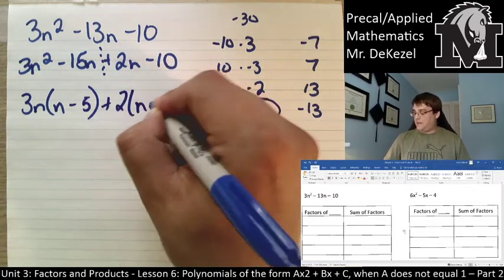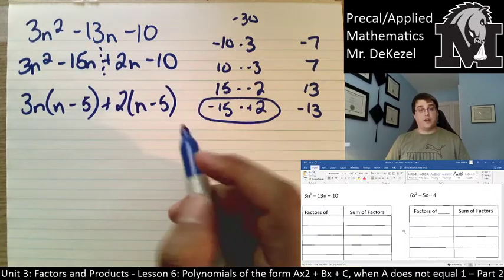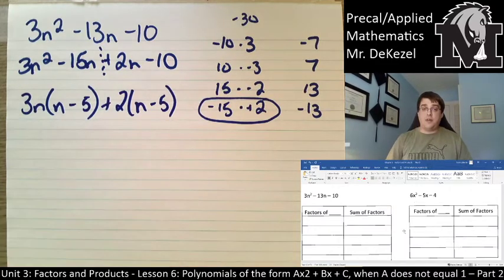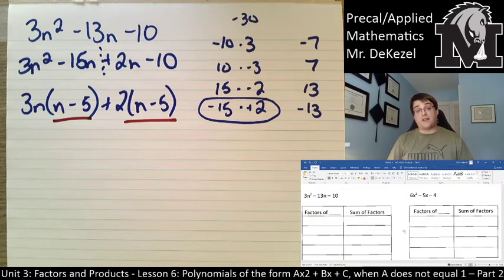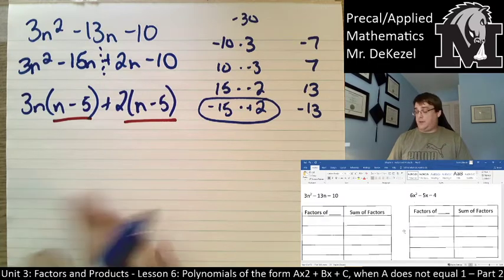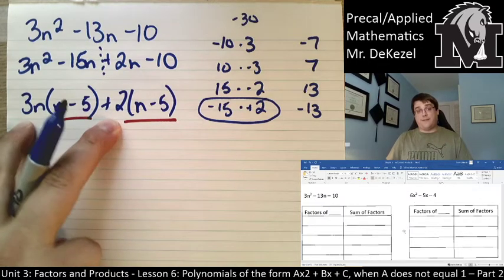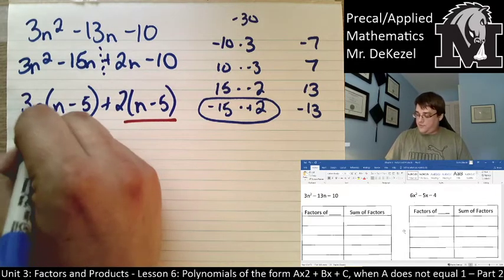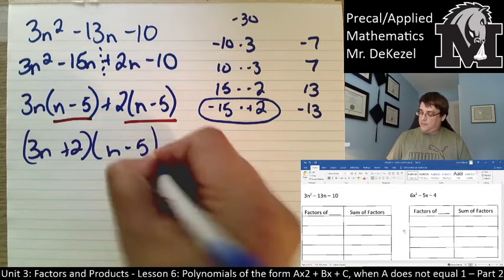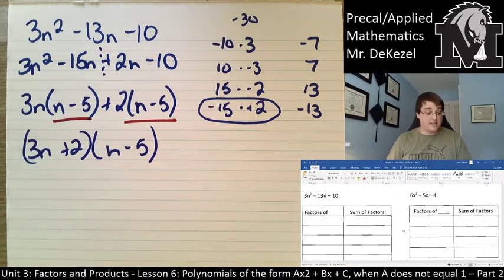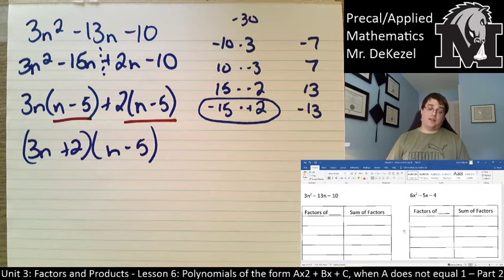So, I can factor out a 3n from this first pair. So, I'll have 3n times n minus 5. And on this one, it looks like I can factor out a 2. So, we'll have 2 times n minus 5. I then have the same thing, which is important. Which means that I can factor both of those out to be left with these in one set of brackets and this in another. 3n plus 2 multiplied by n minus 5. And that is your answer for 3n squared minus 13n minus 10.